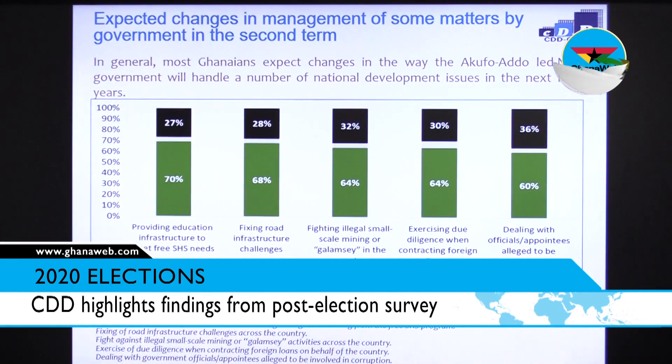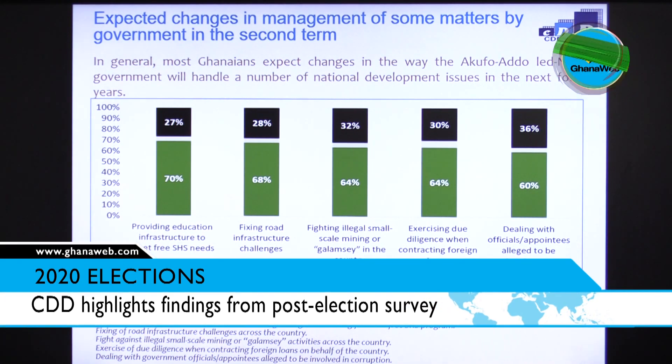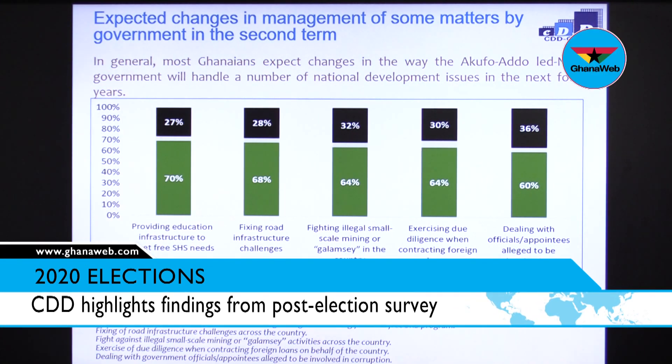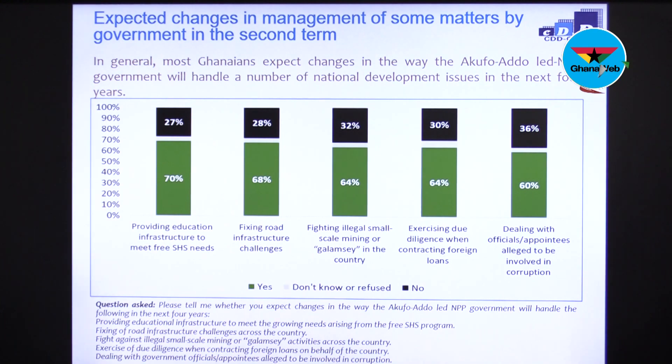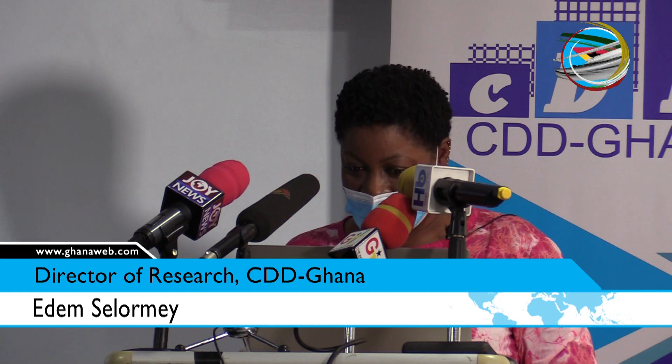What are the expected changes in management of national matters by government in the second term? In general, most Ghanaians expect changes in how the Akufo-Addo-led NPP government will handle national development issues. For instance, 70% are optimistic that the provision of education infrastructure to meet free SHS needs will be fulfilled. Citizens are also optimistic about fixing roads and infrastructure, and expect changes in how illegal small-scale mining is handled.